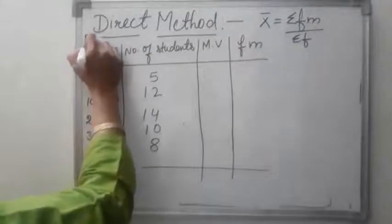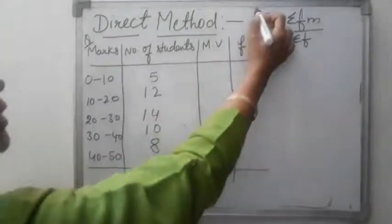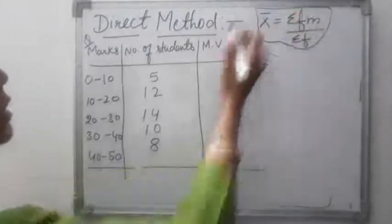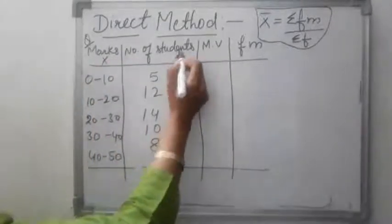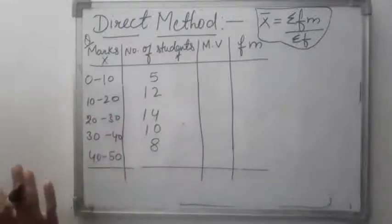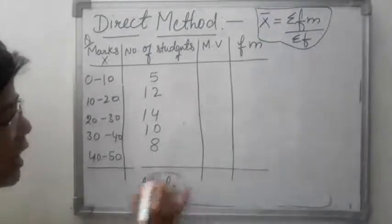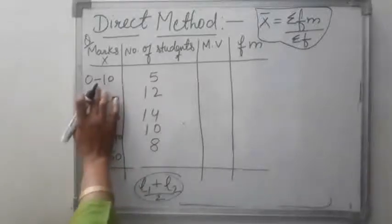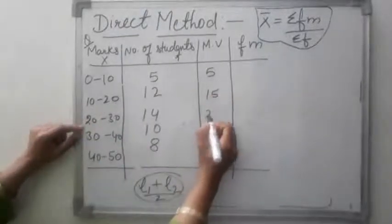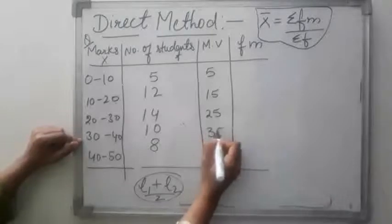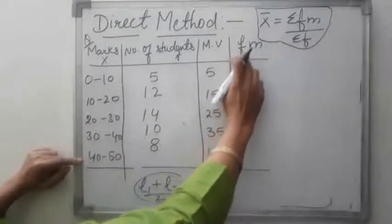We will solve an example using the direct method. Class intervals and frequencies are given. First, we change the class intervals to mid-values using the formula (L1 + L2) / 2. The mid-values are: 0–10 → 5, 10–20 → 15, 20–30 → 25, 30–40 → 35, 40–50 → 45. Then we multiply each frequency by its mid-value.